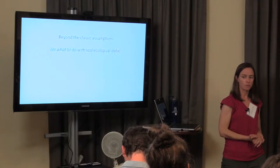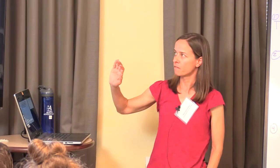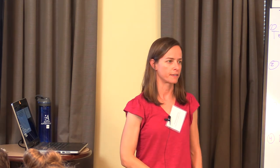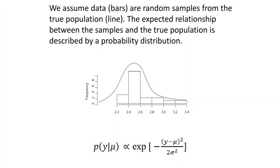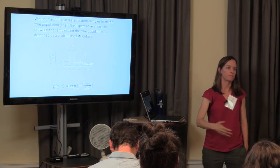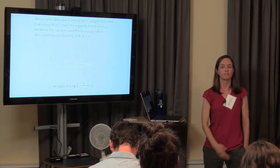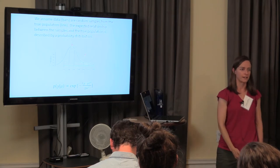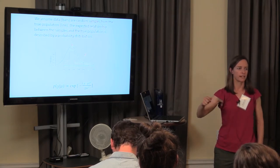So beyond the classic assumptions, what are you actually going to do with real ecological data? It's useful to back up and think about why we use a distribution at all. We assume that the data — this histogram — are random samples from a true population, and we describe that by a probability distribution. This one happened to be a normal distribution. We can't sample everyone, so if we wanted to know the height of people interested in ecological forecasting, we'd use this group to estimate it but not measure everybody.